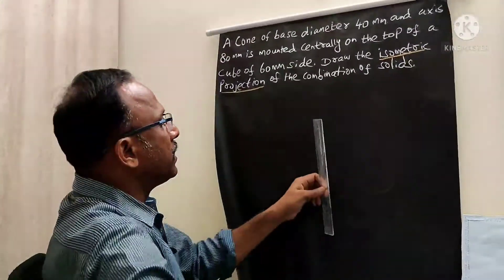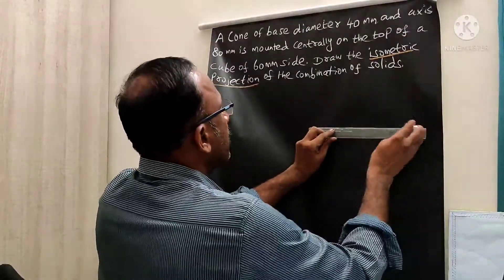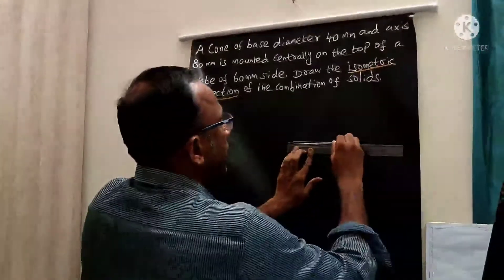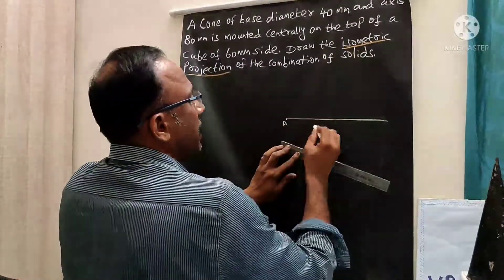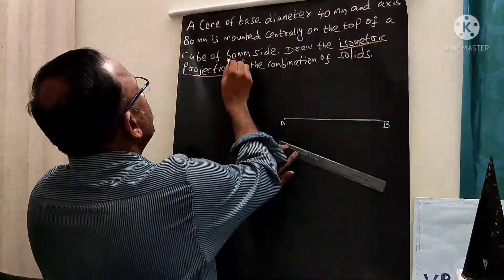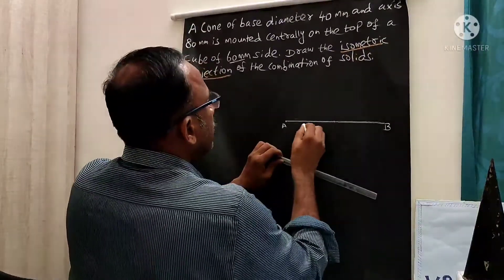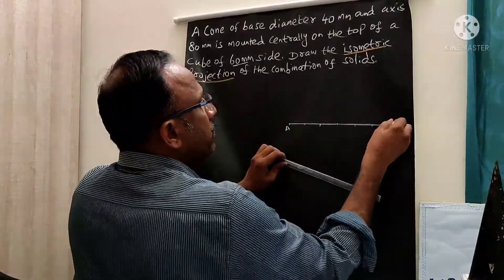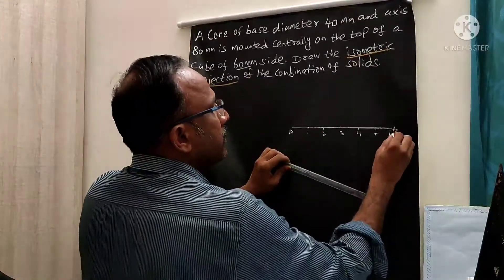So how do we draw the isometric length? First draw the isometric scale. Draw a horizontal line — name it A and B. We need maximum length of 60 mm, so divide this into 6 divisions: 1, 2, 3, 4, 5, 6 divisions.